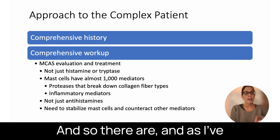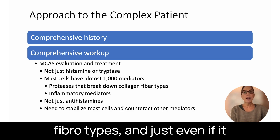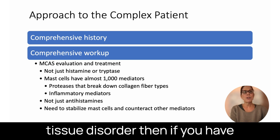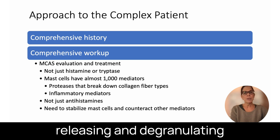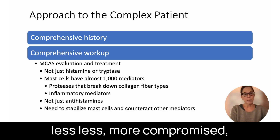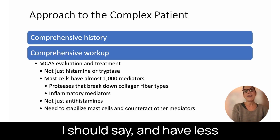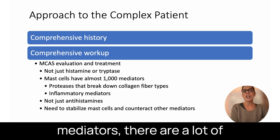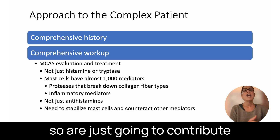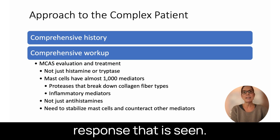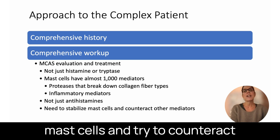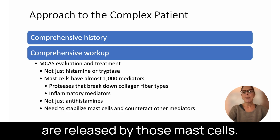Mast cells have almost a thousand different mediators, so treatment is not just about antihistamines. There are proteases that can break down collagen fiber types, and if you have mast cell activation releasing and degranulating proteases — even in a patient with a heritable connective tissue disorder — it's just going to make that connective tissue even more compromised with less structural integrity. There are also many inflammatory mediators released by mast cells that contribute to a perpetual inflammatory response, so the treatment has to stabilize the mast cells and counteract some of those other mediators.